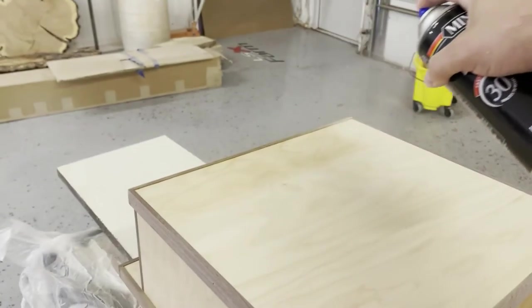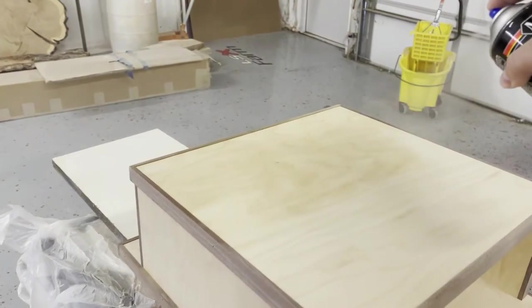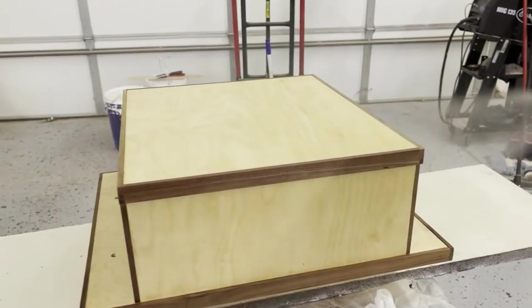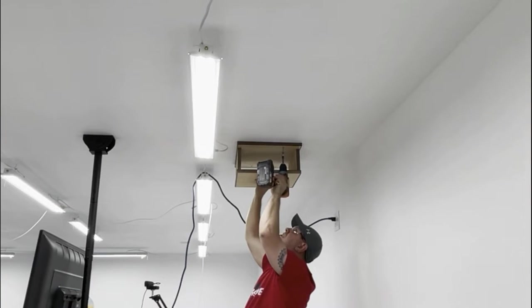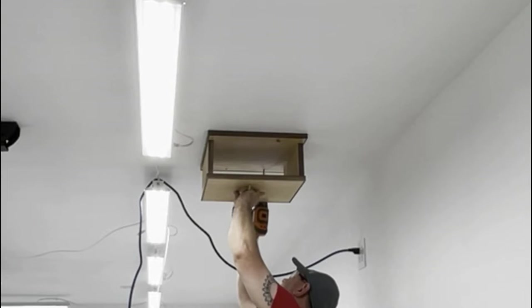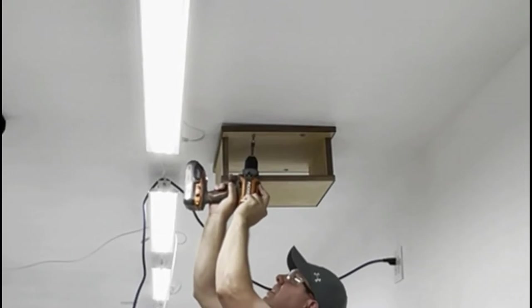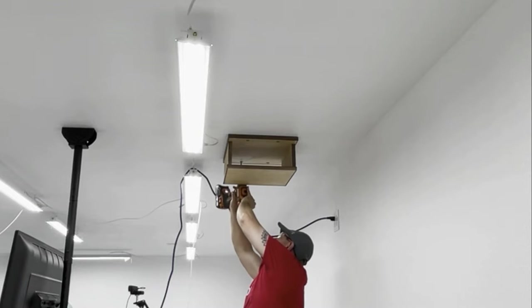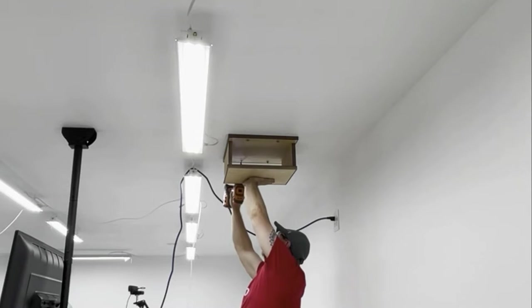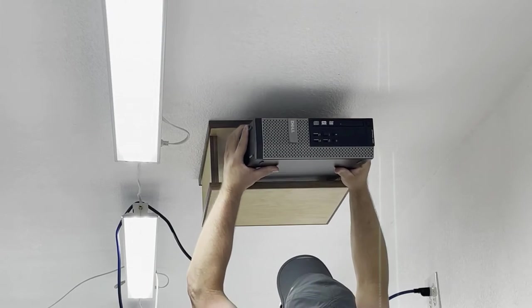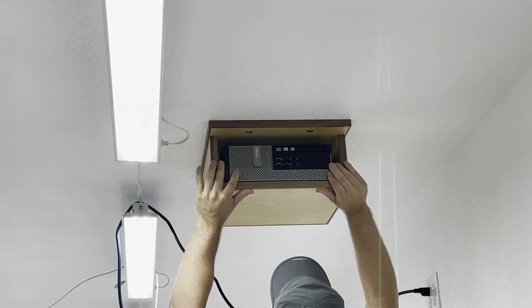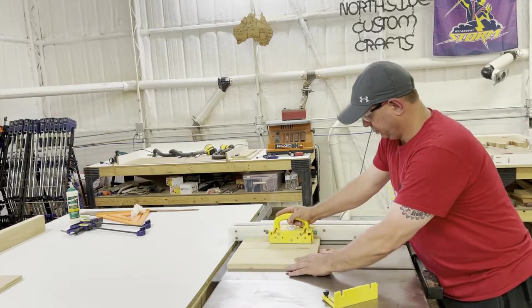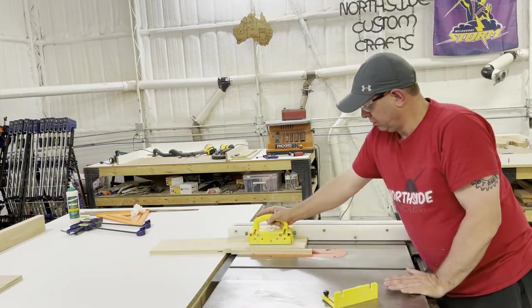I just put a couple coats of spray lacquer on this. I sanded in between with like 300 grit, just lightly sand it and put another coat on. I already had the studs marked on the ceiling. I had the holes drilled at 16 inches apart and used some three and a half inch lag screws and screwed it right up there. Now we have a computer mounted on the ceiling in a box trimmed in walnut.